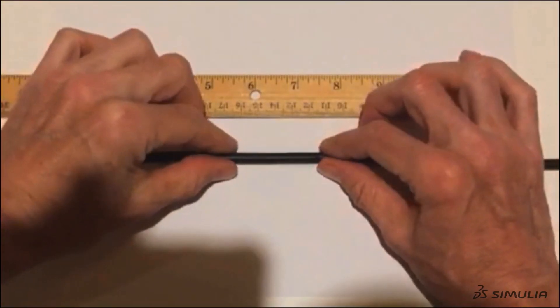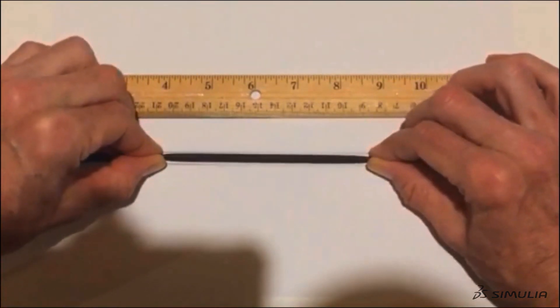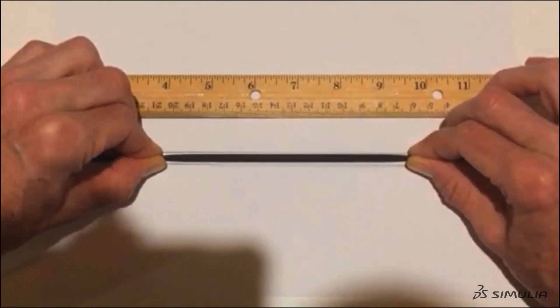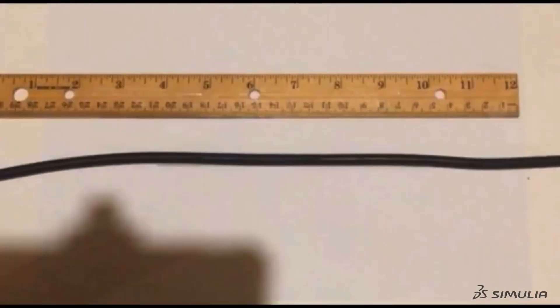When we pull on the rubber cylinder, we can relatively easily elongate it from 5 cm in length to nearly 14 cm. When we release it, the rubber cylinder returns to its original length.